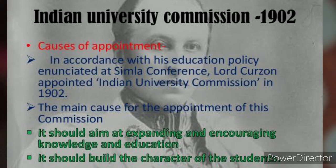9th June को जो University Commission की report थी, वो Lord Curzon को submit कराई गई. इसकी कुछ recommendations में शामिल था कि universities के senate के size को reduce किया जाएगा, examination system को revise और simplify किया जाएगा, matriculation की minimum age 16 रखी जाएगी, और universities में examination के बजाय teaching function को भी include किया जाएगा.